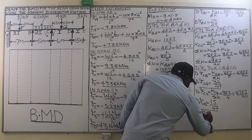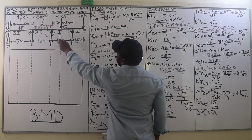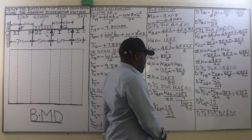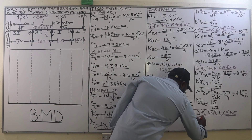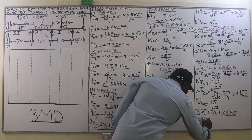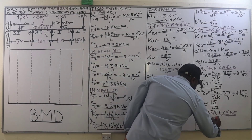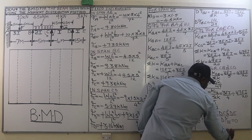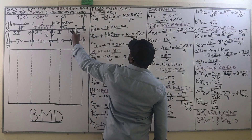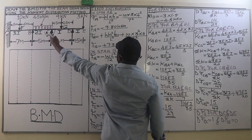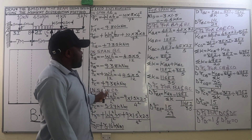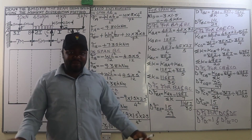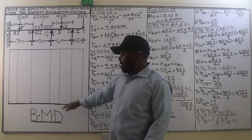Finally, we determine the distribution factors for members DC and DE. As discussed in our previous lesson, since D has an overhanging end, the distribution factor for member DC is 1 and for member DE is 0. When you have an overhanging end, the distribution factor for that end is 0 and the other end is 1. We now have all fixed end moments and distribution factors, so we can fill our distribution table, distribute, and get the final support moments to plot the bending moment diagram.